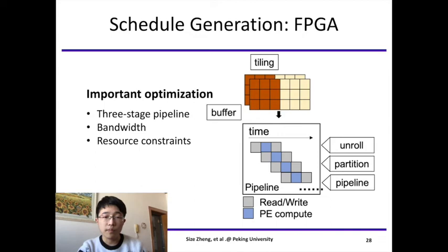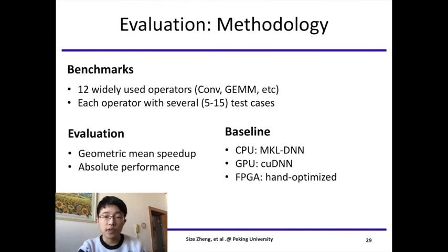In our experiments, we used 12 different benchmarks. Most of them are variants of convolution, including group convolution, depth-wise convolution, and transposed convolution. For each benchmark, we test several different input scales, and the final result is shown in the form of geometric mean performance speedup and absolute performance. Our baselines are MKL-DNN, cuDNN, and hand-optimized kernels.